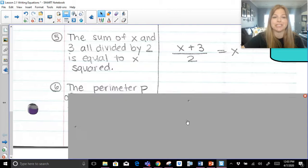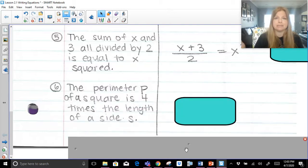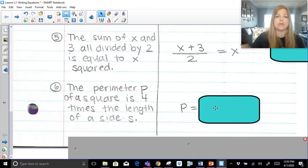Good. I've got one last translating problem for us. This is actually going to be the quickest one. The perimeter p of a square is, let's start this, p is, so that's p equals 4 times the length of a side s. 4 times the length of a side s.